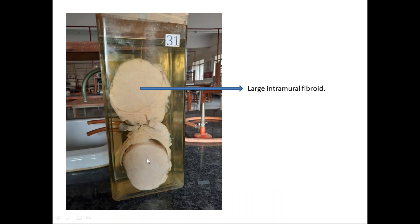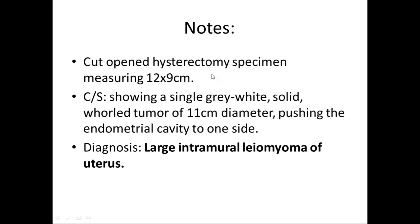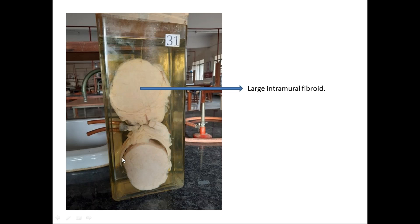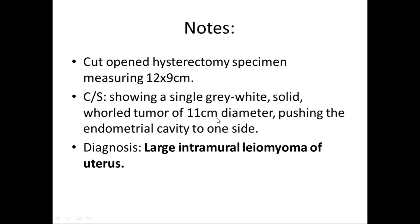This is a specimen from our lab — a cut-open hysterectomy specimen. The cervix and uterus are identified. The uterus is completely filled with a single large intramural leiomyoma. The specimen measures 12 x 9 cm. Cut section shows a single grey-white solid tumor of 11 cm diameter pushing the endometrial cavity to one side. The diagnosis is large intramural leiomyoma of the uterus.